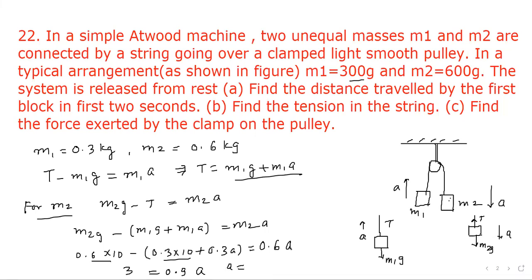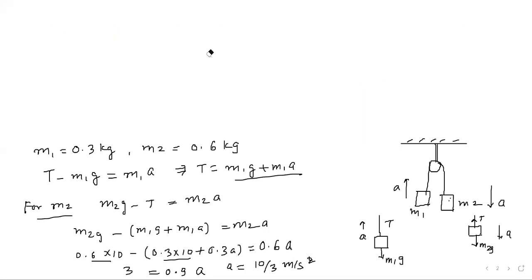From where we get a is equal to 3 upon 0.9, it will be 10 by 3 meter per second square. So this is acceleration. Now we have to find out distance traveled in first two seconds. So let's evaluate it. Distance traveled in first two seconds, we can apply the formula s equal to u t plus half a t square. So s is to be found, starting from rest so s equal to 0 plus half, acceleration we have got as 10 by 3, and time is 2 square, so this will be equal to 6.67 meters.